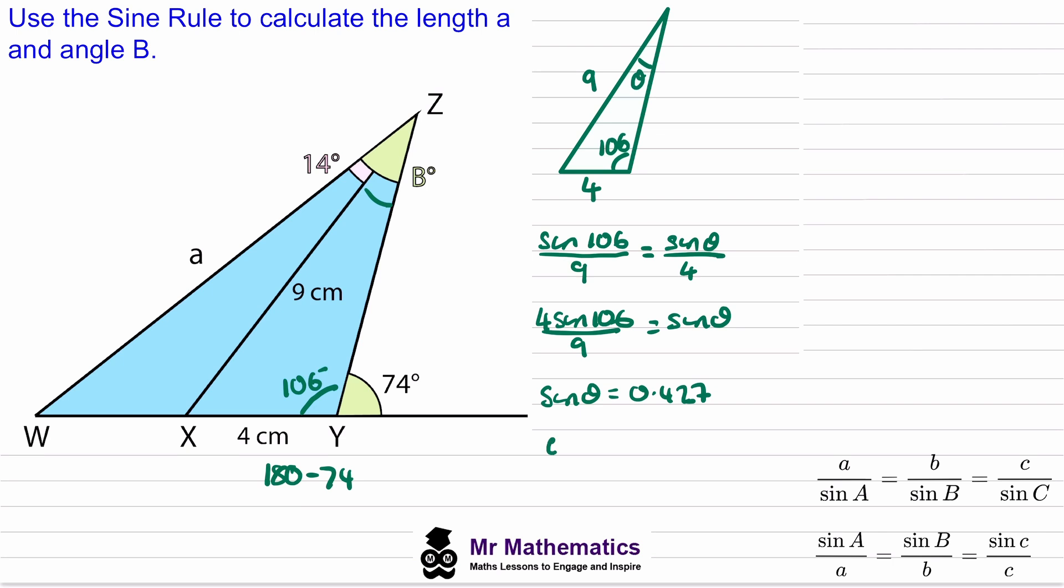And then theta will be the arc sine of 0.427, so theta is approximately 25.3 degrees to one decimal place and I'll write this on the diagram as 25.3.